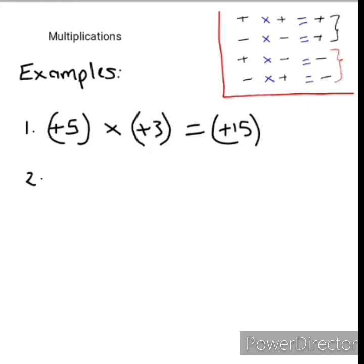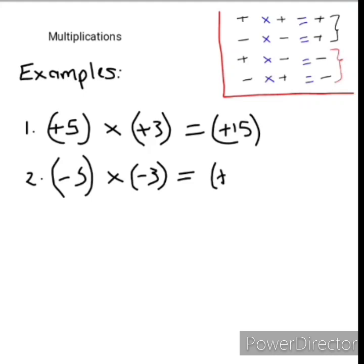Our second example: if we have negative 5 multiplied by negative 3, then according to rule number two, a negative multiplied by a negative gives us a positive value. 5 multiplied by 3 equals 15, making our answer a positive 15.